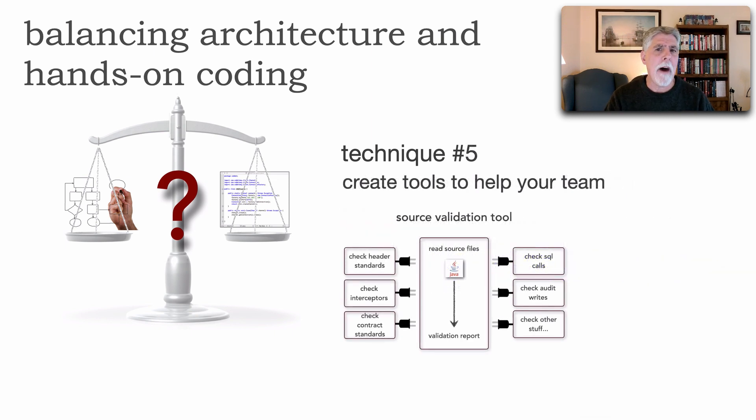Two more techniques. Technique number five, which I've also found very valuable, is write productivity tools to help your team. So for example, source validation tool. There's a lot of things we can't do in tools like lint and tests, like check styles or PMD or find bugs that need to be done. For example, checking validity of SQL calls or checking audit writes or making sure you have the right interceptor in place if you have multiple of those. Contract standards. All of these are usually manual checks. And so we can automate some of those things that are on our checklists by just creating a simple source validation tool using the microkernel architecture. This is a way your team will love you for this and you're not taking away from their core job, which is to develop the functionality.